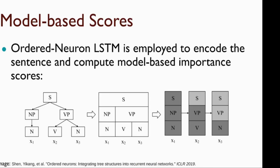For model-based importance scores, we are using Ordered-Neuron LSTM, which is a variant of LSTM. The main idea is to update different portions of the hidden neurons at different timestamps. For instance, for the given sample sentence, if X1 is the most important word in the sentence, we should update more neurons, all three neurons. If X2 is the next important one, we should update only two neurons. And for X3, which is the least important one, we should update only one neuron.